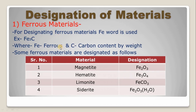First of all, we will see how to designate ferrous material. For designating the ferrous material, we use the word 'Fe'. For example, Fe3C represents Iron Carbon. Ferrous means Iron, so Fe means Ferrous. It is designated like this, where Fe is ferrous and C is carbon content by weight.